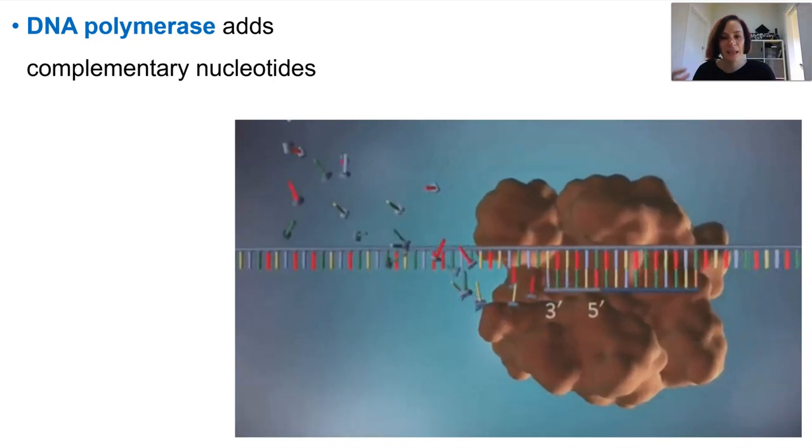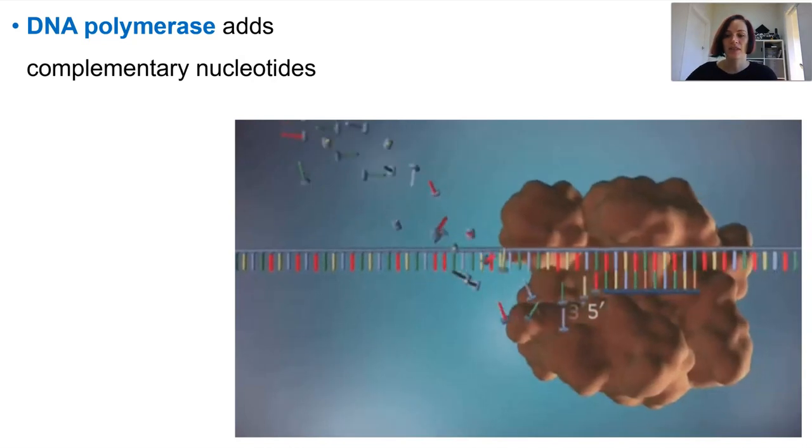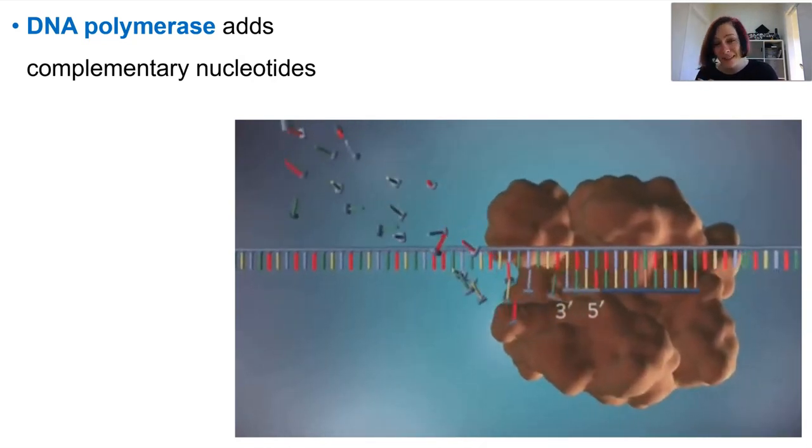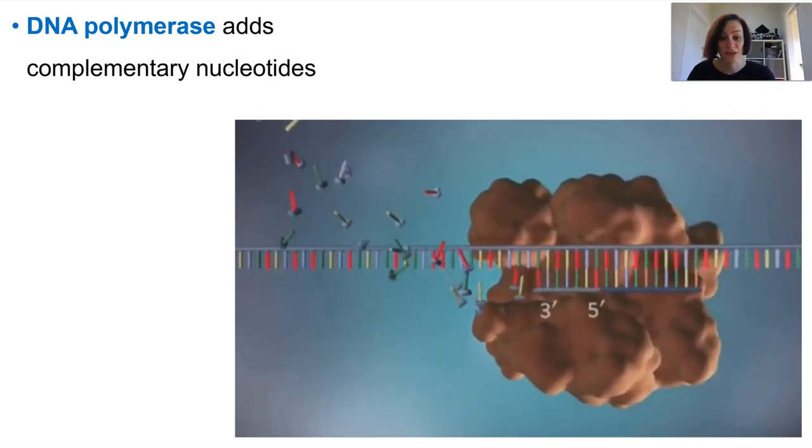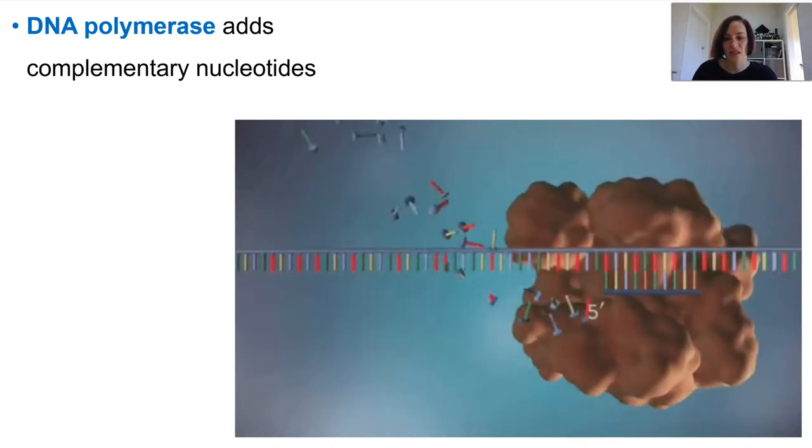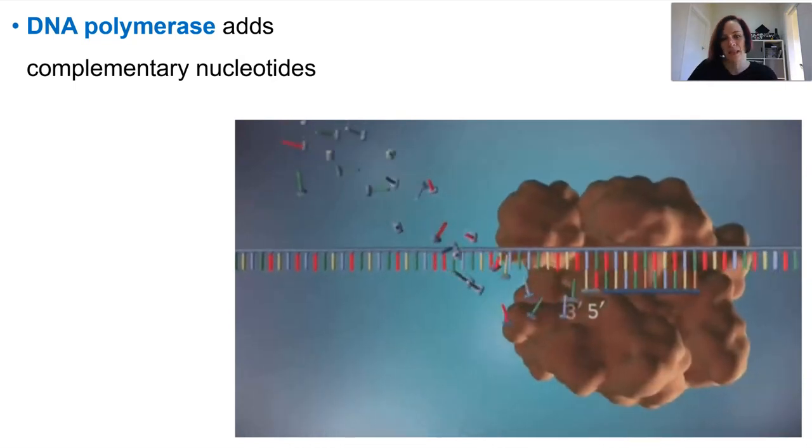And the DNA polymerase is incredibly accurate at matching complementary base pairs. So even if it makes a mistake, which is estimated to be about one in every 10 billion base pairs, it has the ability to proofread and then correct itself. So if there's still issues later on down the process, other enzymes will actually finish this off and do their own corrections before it re-zips up the DNA molecule.